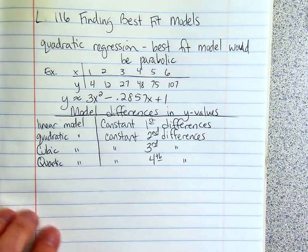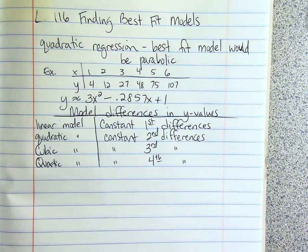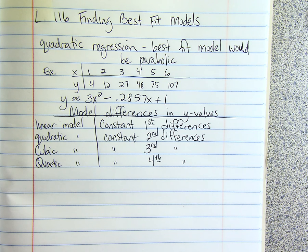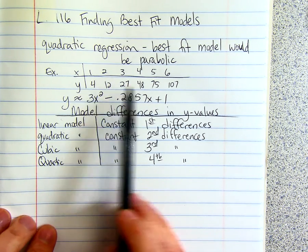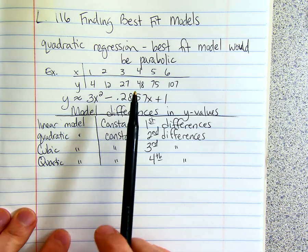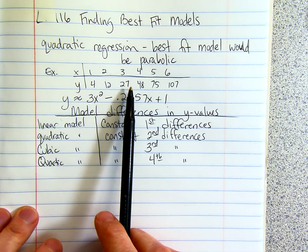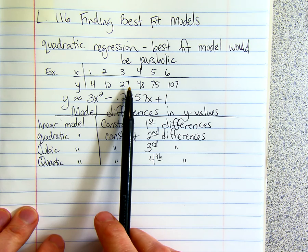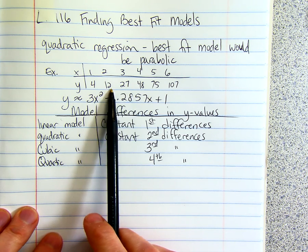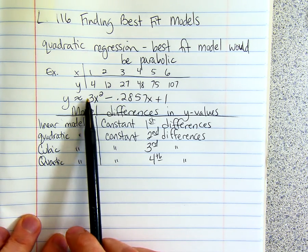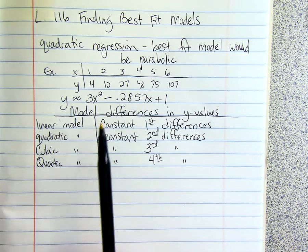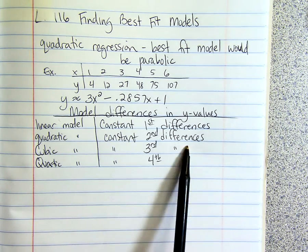So this just means you look at the difference in the y values, and then you look at the difference of the differences, and then the difference of the differences, and so on. So you just take your y values, like this one. We did 12 minus 4 is 8. 27 minus 12 is 15, and then you would do 15 minus 8, and that would be 7. So that's the difference of the second differences.